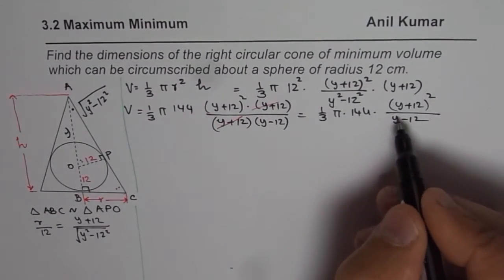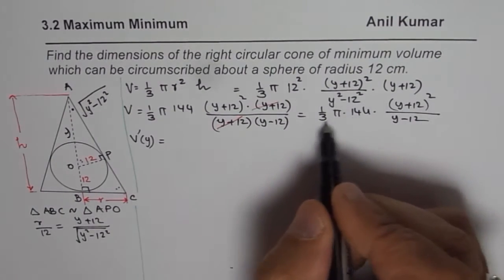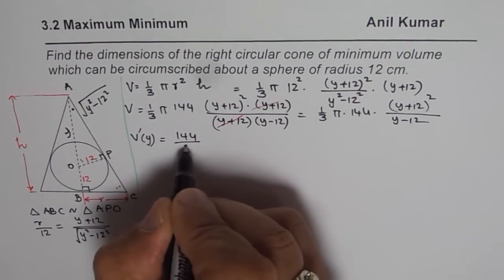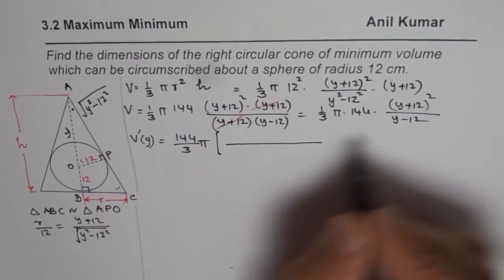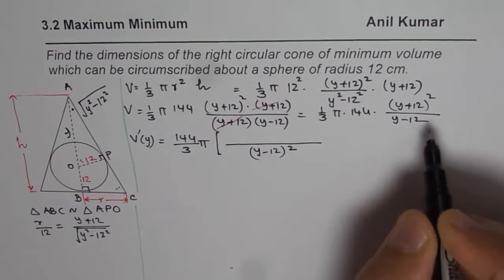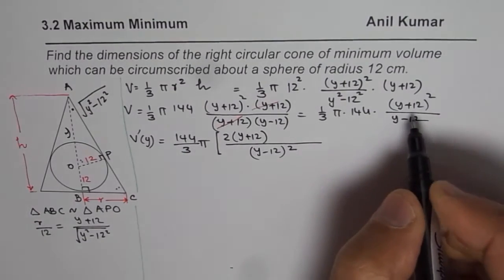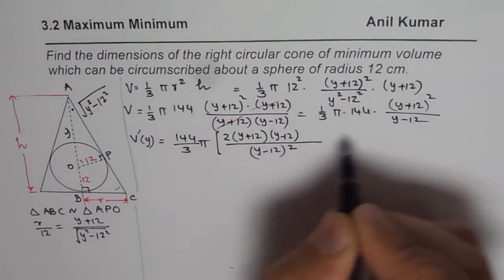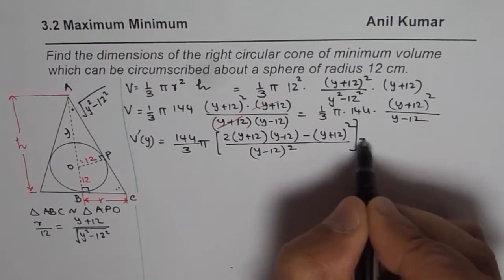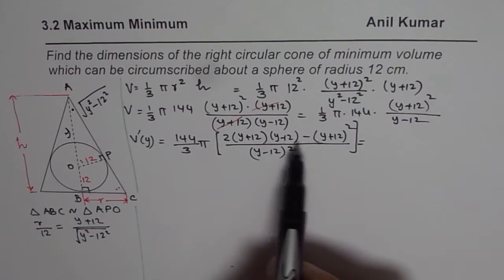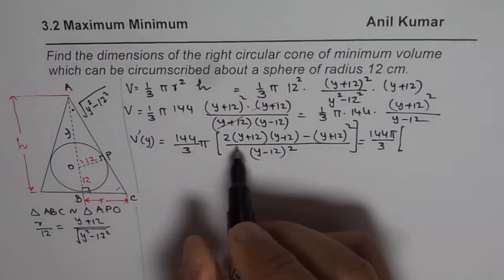If we find the derivative of this volume with respect to Y, using the quotient rule we get 144 pi over 3, times the quantity: 2(Y plus 12)(Y minus 12) minus (Y plus 12) squared, all divided by (Y minus 12) squared. We then simplify the numerator by factoring out (Y plus 12), giving (Y plus 12) times [2(Y minus 12) minus (Y plus 12)], divided by (Y minus 12) squared.